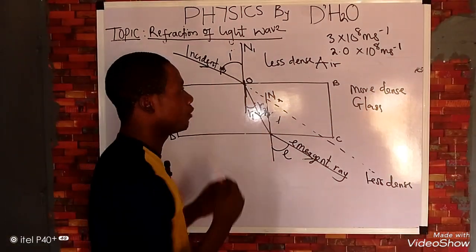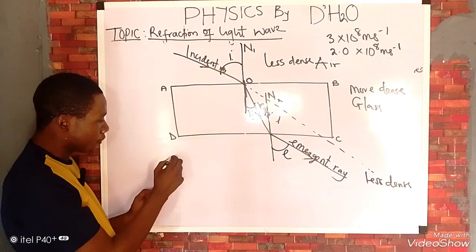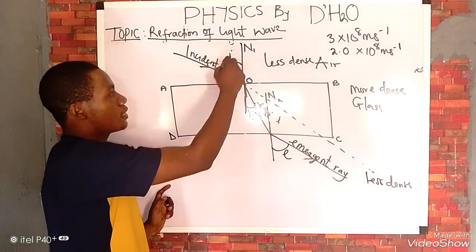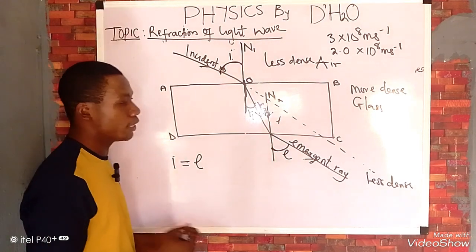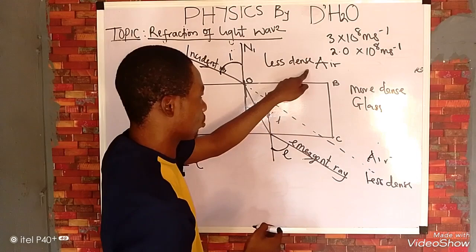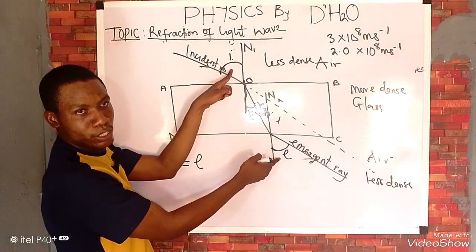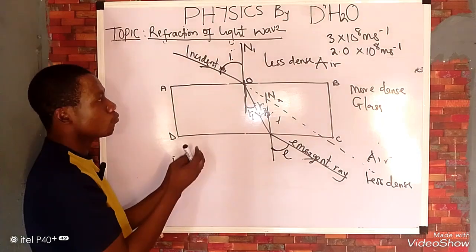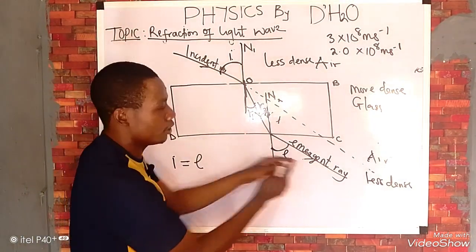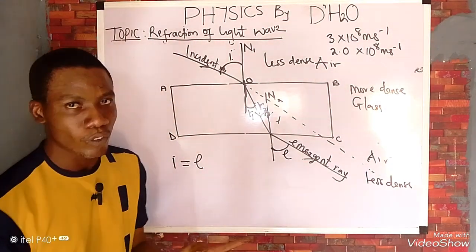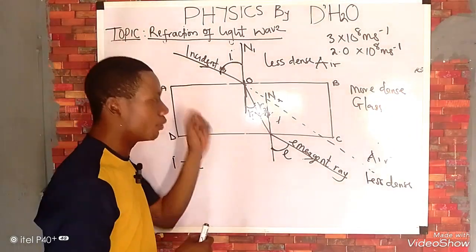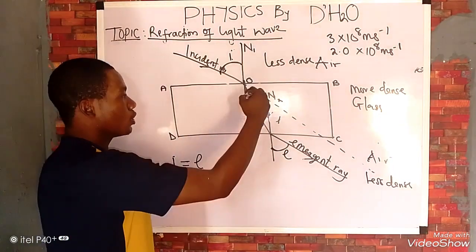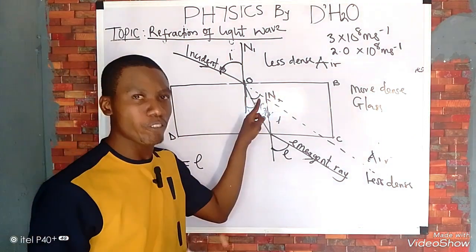The angle of incidence is equal to the angle of emergence. The incident ray is parallel to the emergent ray, which means there is no angle of deviation between them. The ray of light was simply displaced laterally, and we can call this the angle of displacement.